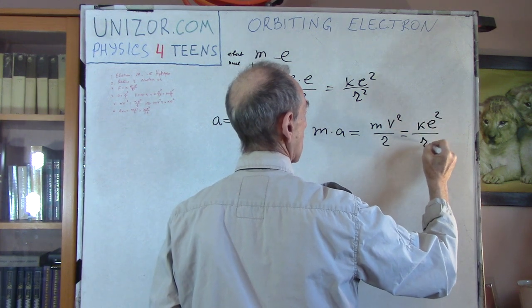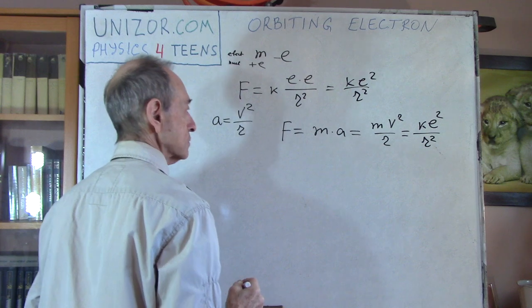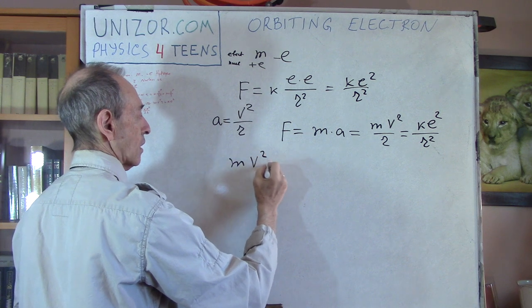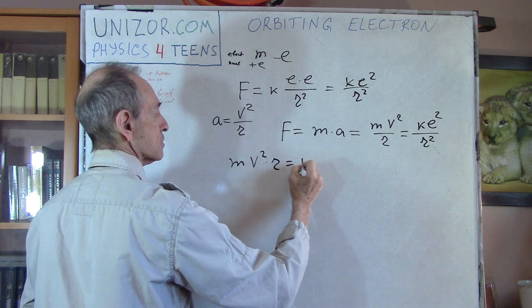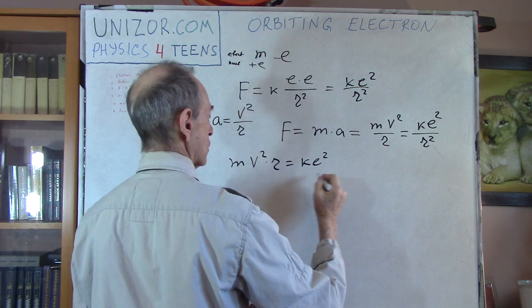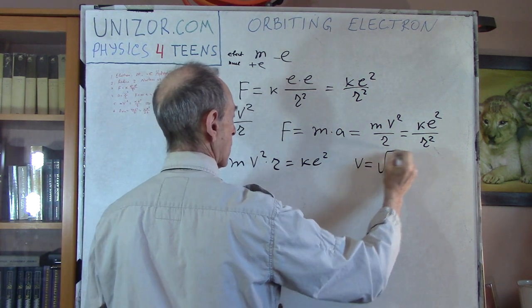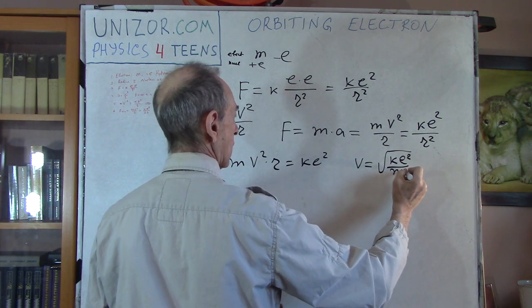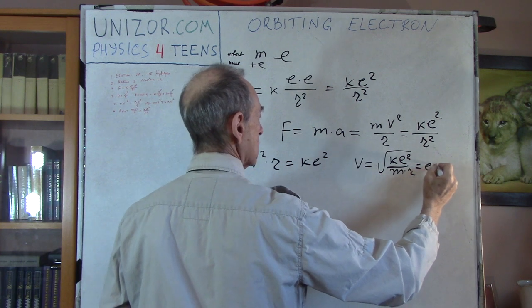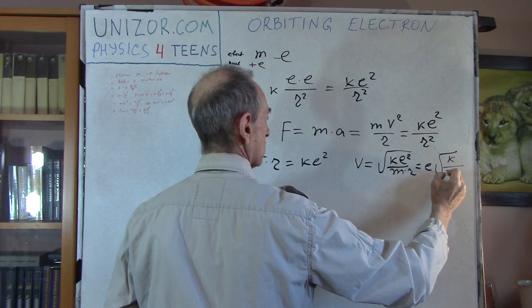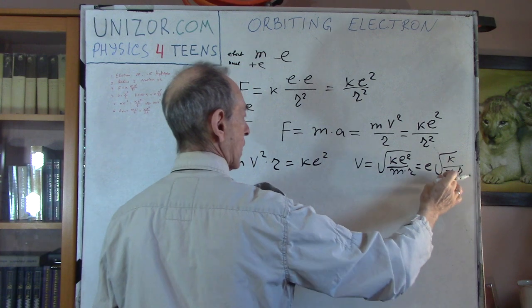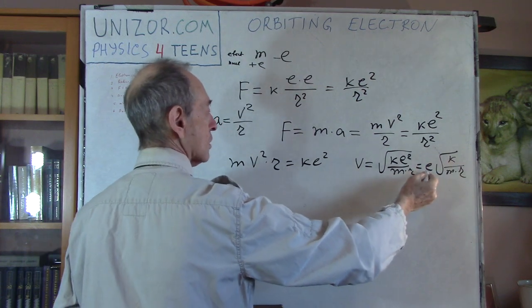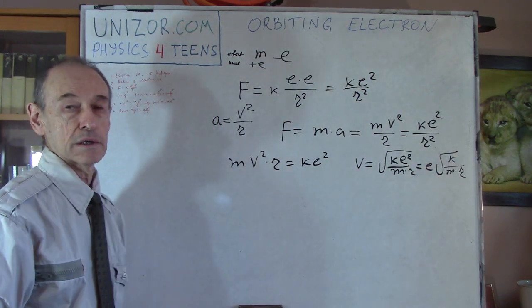Setting the two expressions equal and rearranging: MV²R = KE², from which V equals the square root of KE² / (MR), or equivalently E times the square root of K / (MR), where M is the mass of the electron, R is the radius of the orbit, K is Coulomb's constant, and E is the charge of the electron.